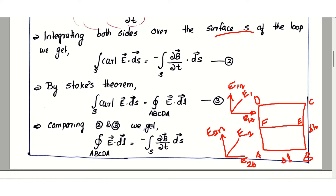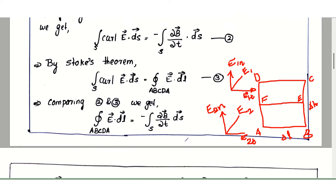The left sides are equal, therefore we can write the right sides as equal: the line integral over ABCDA of E dot dL equals minus the surface integral of ∂B/∂t dot dS.